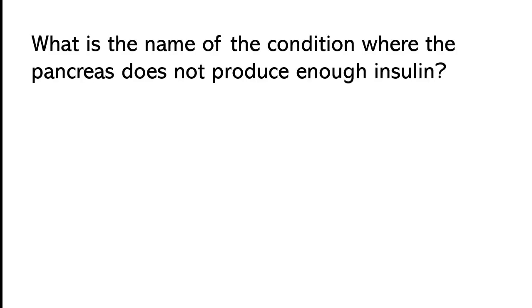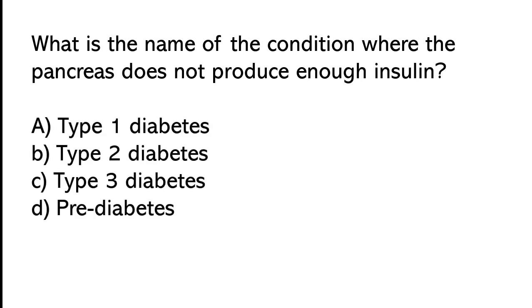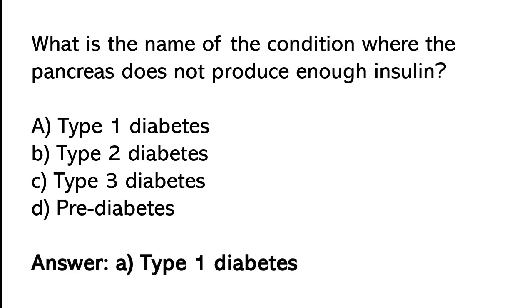What is the name of the condition where the pancreas does not produce enough insulin? Type 1 diabetes, type 2 diabetes, type 3 diabetes, or gestational diabetes. The correct answer is option A — type 1 diabetes.